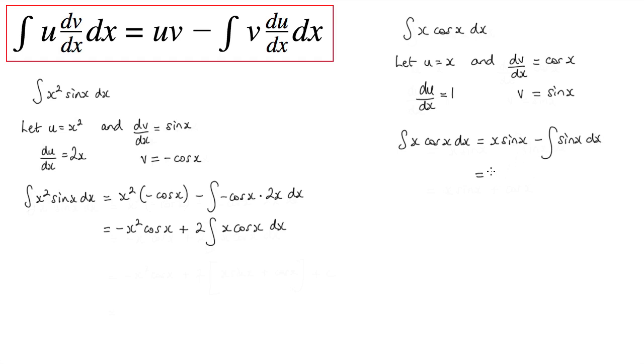So we've got x sin x minus the integral of sin x, which is actually minus cos x, so minus cos x. We can simplify a little bit further: x sin x, two negatives make positive, plus cos x. Obviously we'd have our constant of integration as well, but we can leave that to the very end.